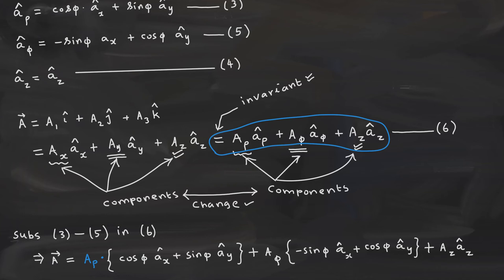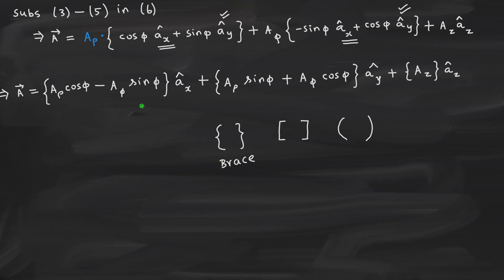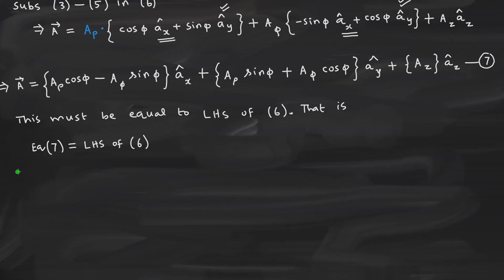Let us now simplify this. Whatever is inside the brace — the left brace and right brace — anything inside the brace would be the component corresponding to that unit vector. So this is the ax unit vector, and whatever is inside the brace is that component. Similarly for y.